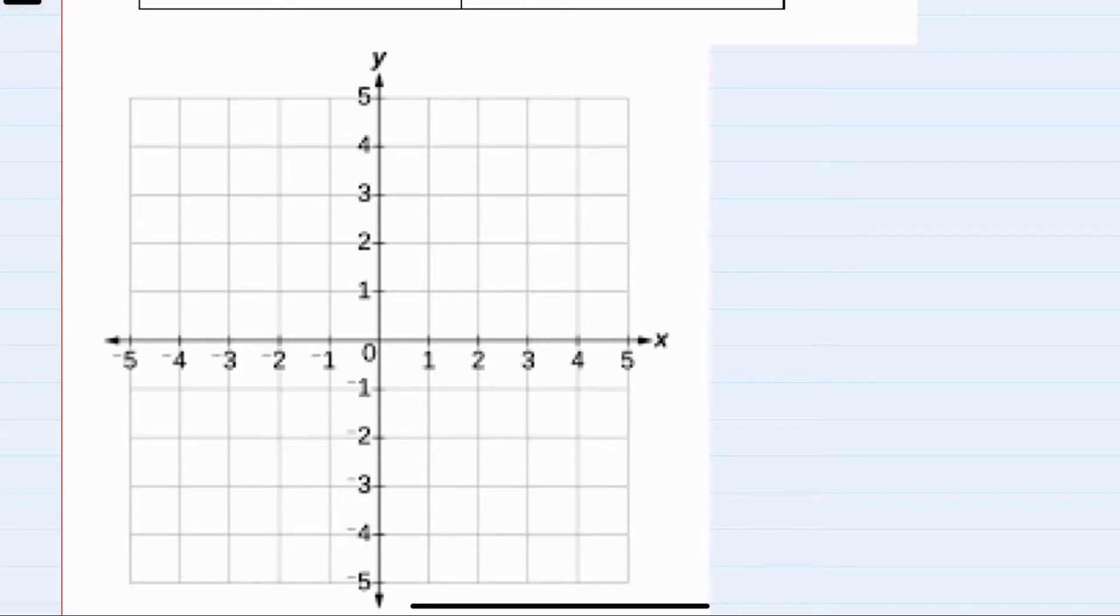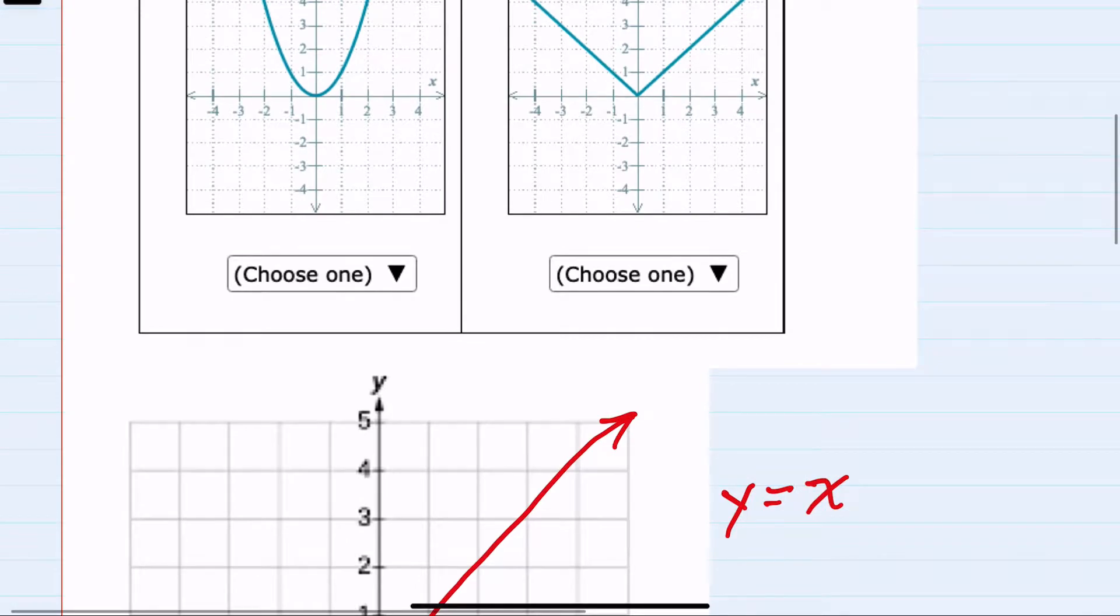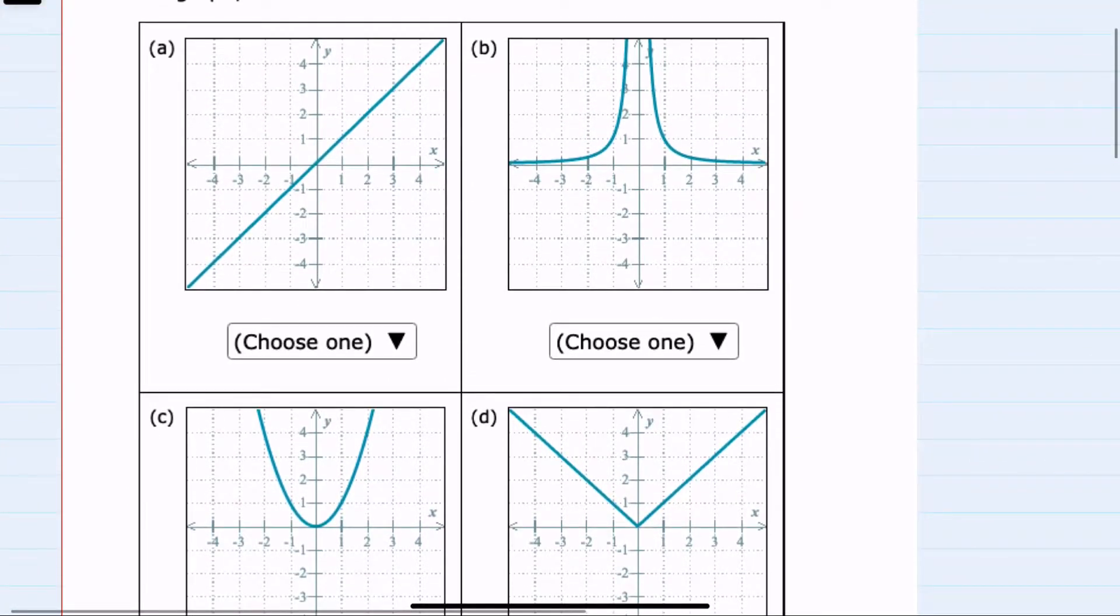Moving on to the next, we can look at y equals the variable x. This will be a sloped line, so on a diagonal. Again, looking back at our examples, we do see that one of these has that straight line on an angle look, so the parent function here would be y equals x.